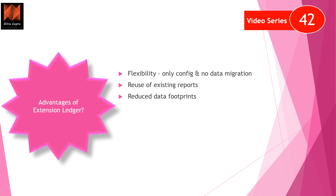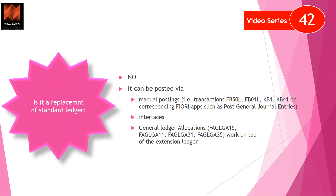The same data is accessed by both ledgers and is not stored in different tables — it remains a single data footprint. Anything that is a delta posting on the extension ledger also resides in this one table, so you have less data footprint but data is accessible in two formats.